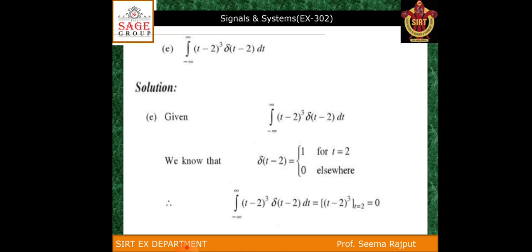The last example is the integration from minus infinity to infinity of (t−2) cubed times δ(t−2) dt. For δ(t−2), it equals 1 for t equal to 2 and 0 elsewhere. Putting t equal to 2 in (t−2) cubed: 2 minus 2 equals 0, so 0 cubed is 0. The final answer is 0.